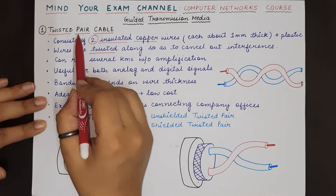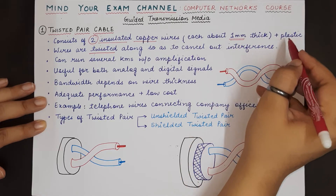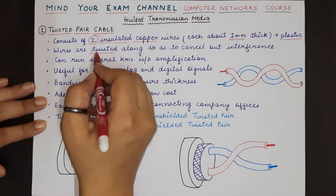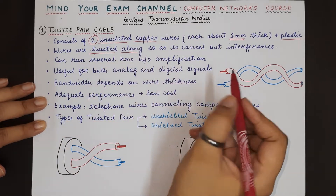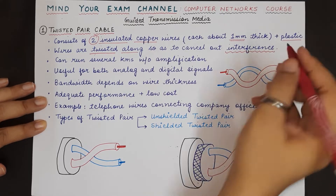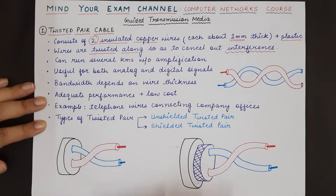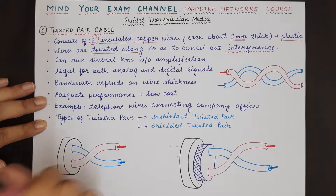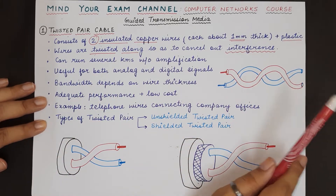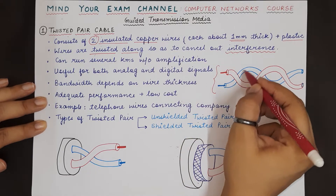The twisted pair cable has a one millimeter thick copper wire. Each wire is covered with a plastic, and then both these wires are twisted one upon the other so that any interference in the signal traveling through these wires can be cancelled out. This is the use of twisting the cables one upon the other.